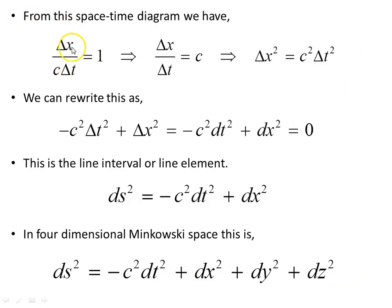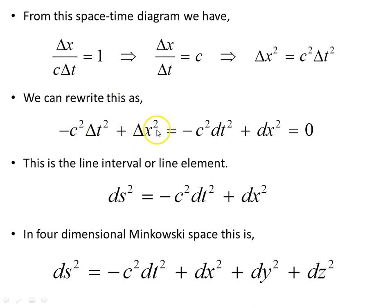From this spacetime diagram we have Δx on c·Δt equal to 1, which implies Δx equals c·Δt. If we multiply both sides by Δt and square both sides, we get Δx² = c²Δt². Our next step is to subtract c²Δt² from the right-hand side and bring it to the left, giving us minus c²Δt² plus Δx² equals zero.